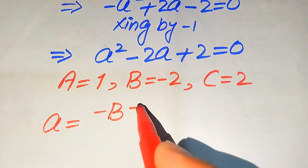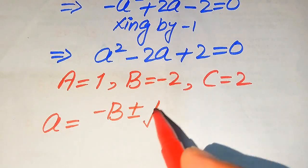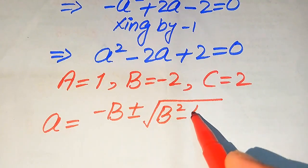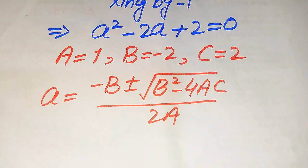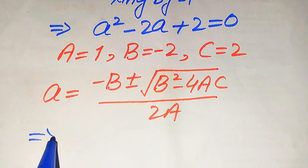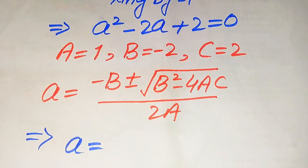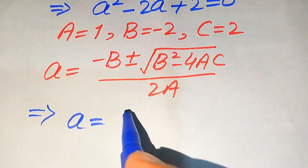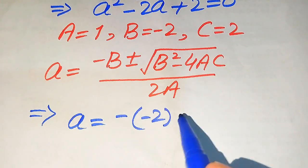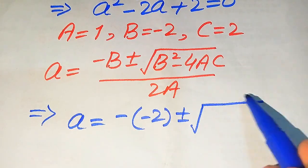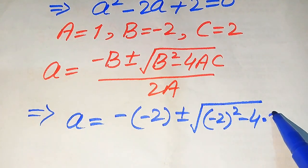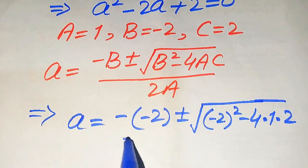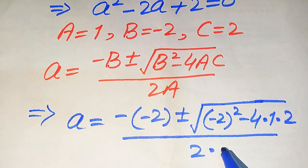The quadratic formula states that small a equals minus B plus or minus the square root of B squared minus 4AC, all divided by 2A. Substituting the values, we get a equals minus(minus 2) plus or minus the square root of (minus 2) squared minus 4 times 1 times 2, divided by 2 times 1.